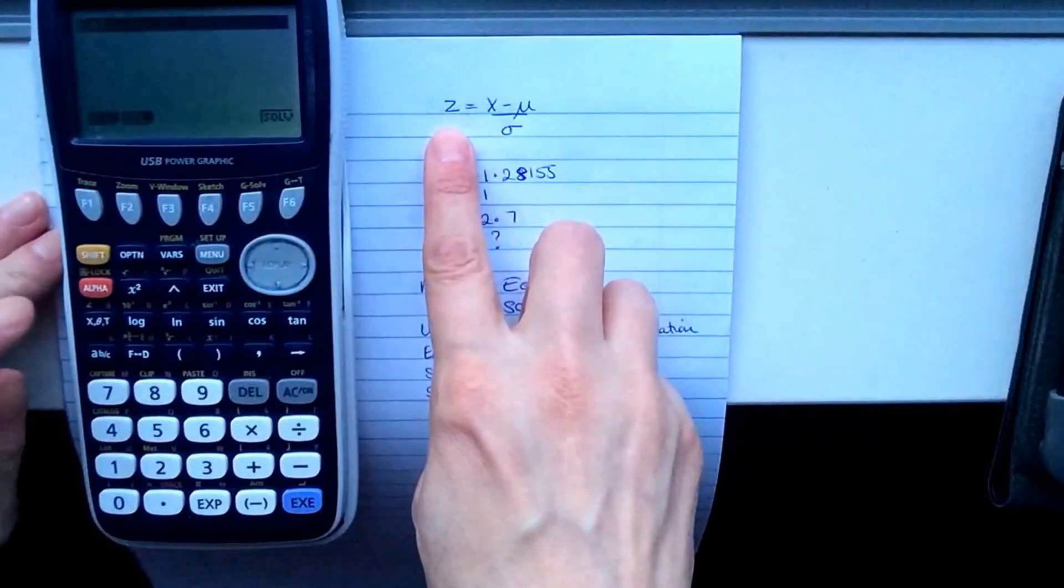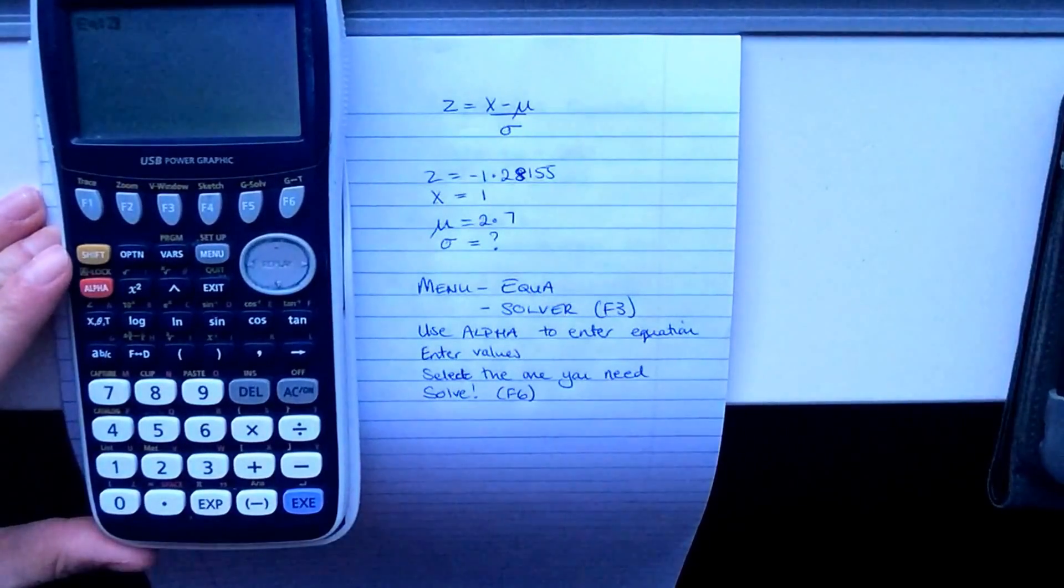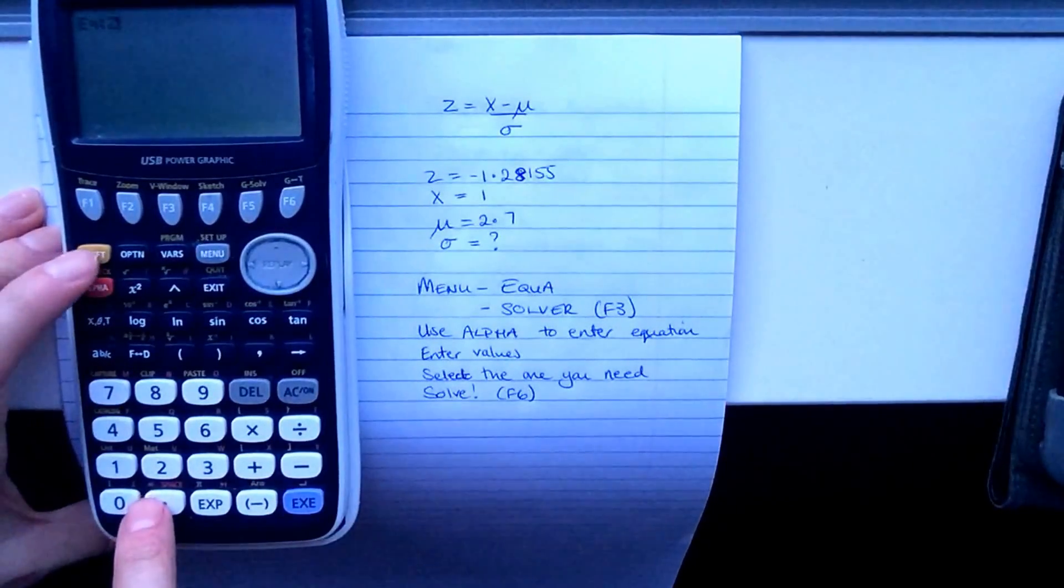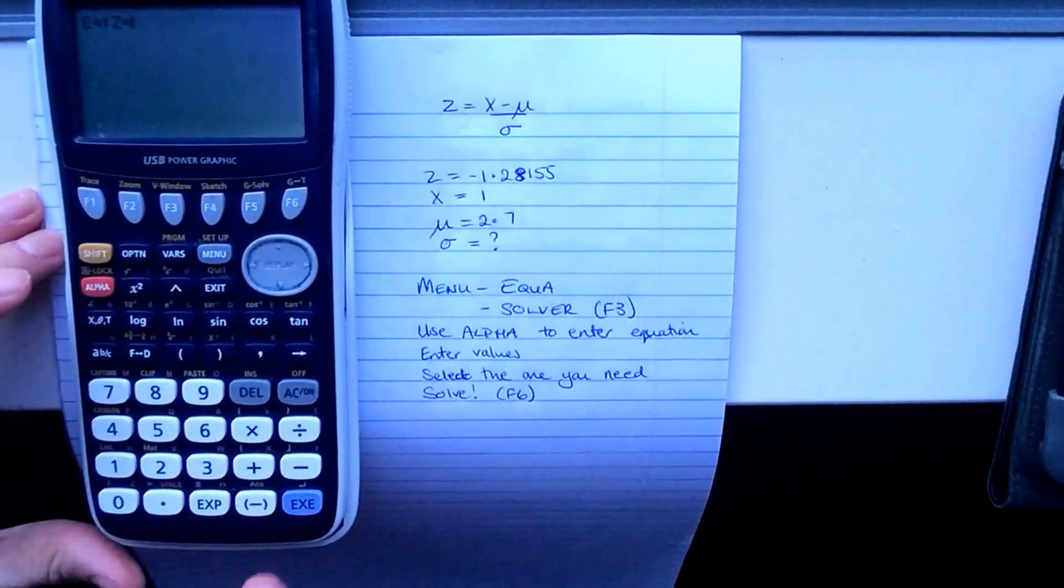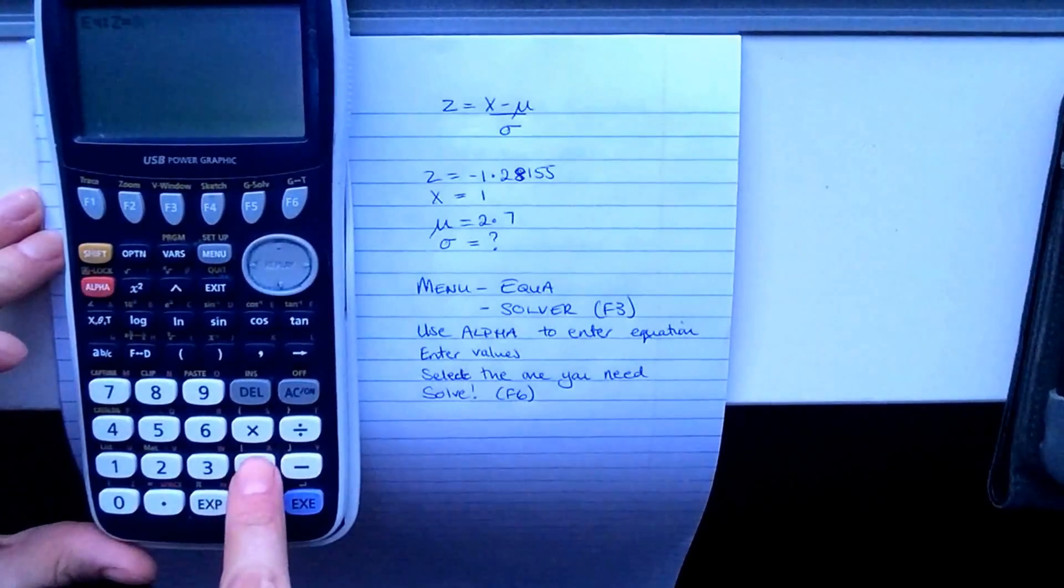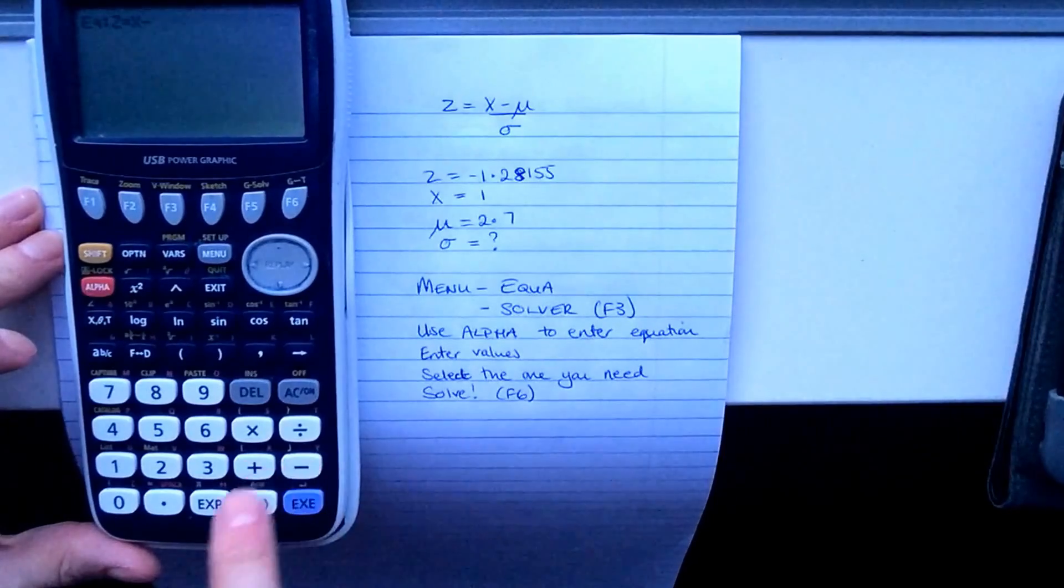We're going to go for alpha Z. Now the equals is just here, but it's in orange, so you need to use that shift to get that one. So Z equals, now, alpha X minus mu.